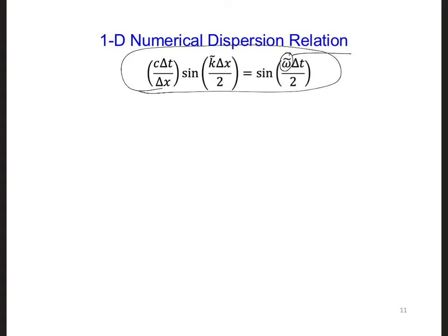That threshold where omega tilde, the tilde of course means it's a numerical angular frequency. The threshold where it changed from a real number to a complex number became our one-dimensional stability limit.